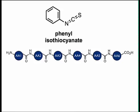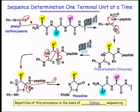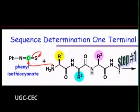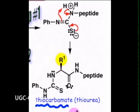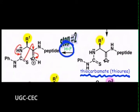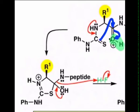To sequence an entire polypeptide, a chemical method devised by Edman is usually employed. The Edman degradation procedure labels and removes only the amino terminal residue from a peptide, leaving all other peptide bonds intact. The peptide is reacted with phenyl isothiocyanate under mildly alkaline conditions, which converts the amino terminal amino acid to a phenyl thiocarbamyl adduct. The peptide bond next to the PTC adduct is then cleaved in a step carried out in anhydrous trifluoroacetic acid, with removal of the amino terminal amino acid as an anilinothiazolinone derivative. The derivatized amino acid is extracted with organic solvents, converted to the more stable phenylthiohydantoin derivative by treatment with aqueous acid, and then identified.